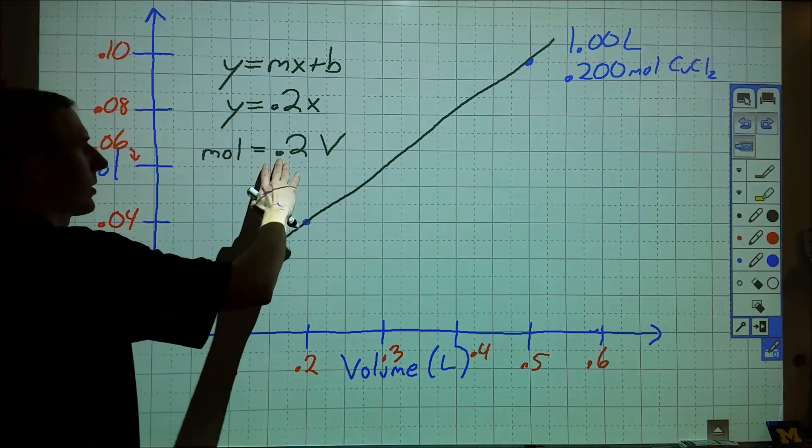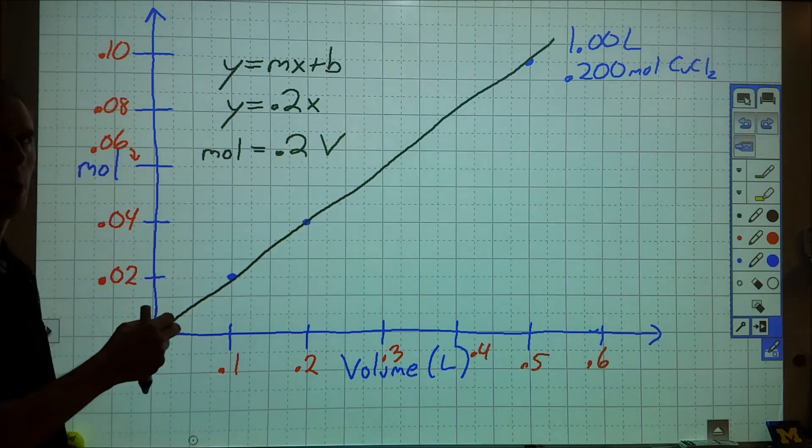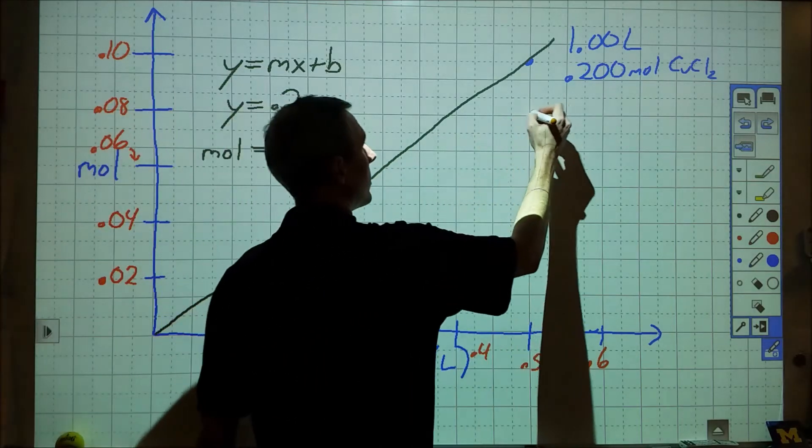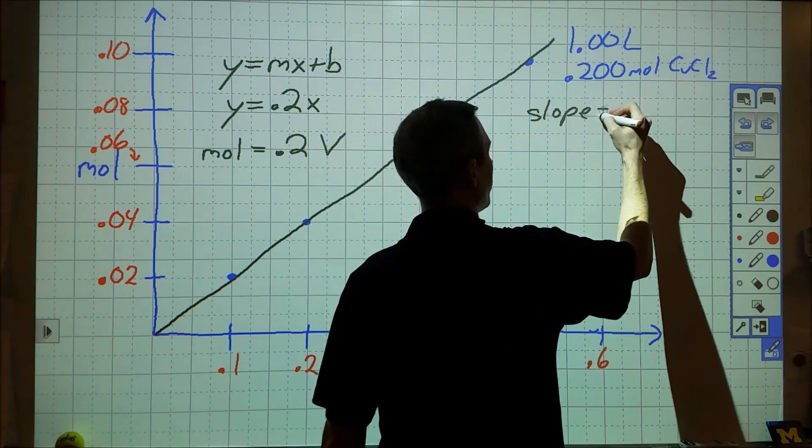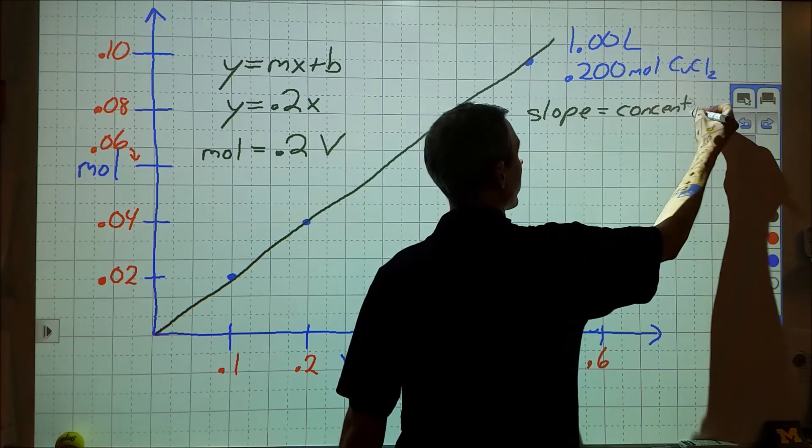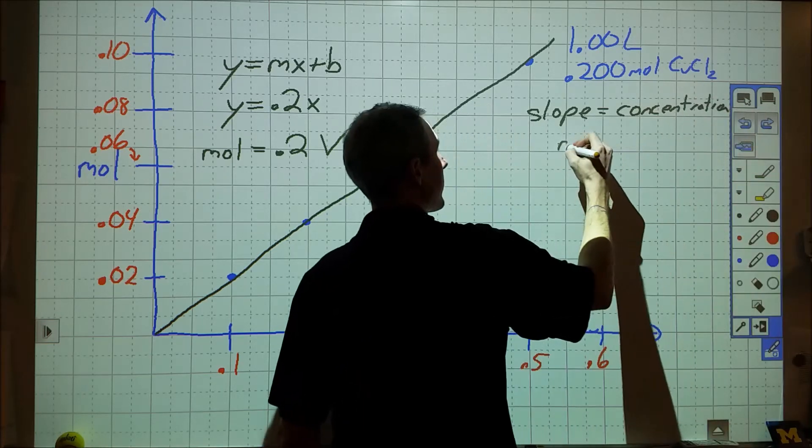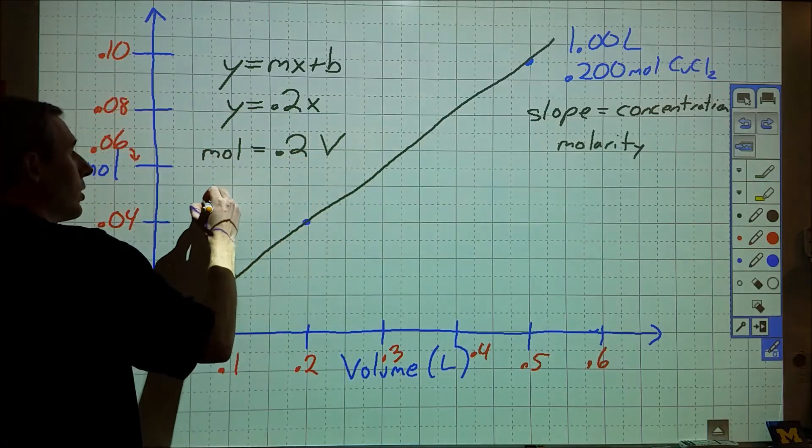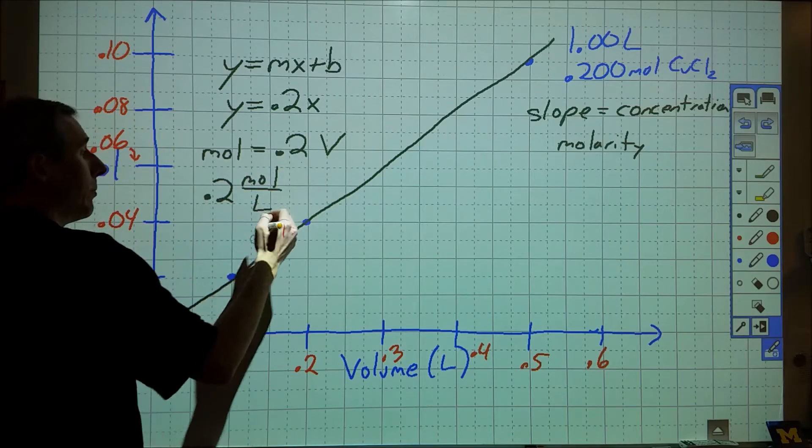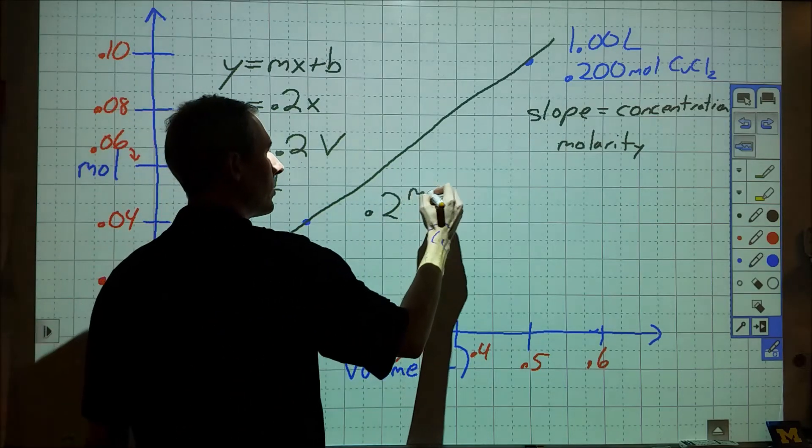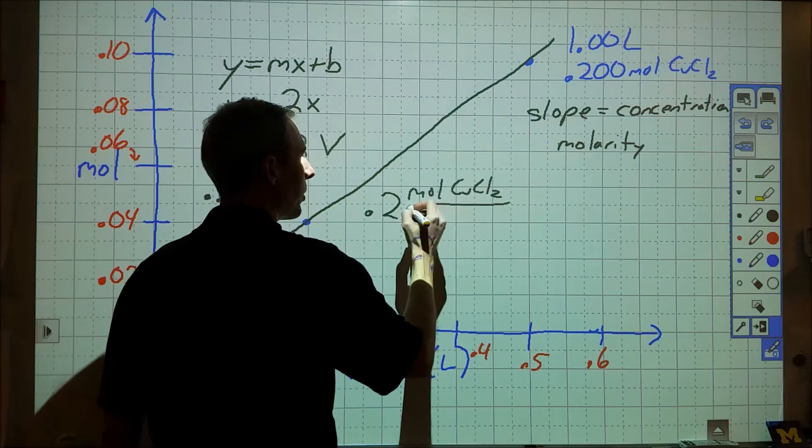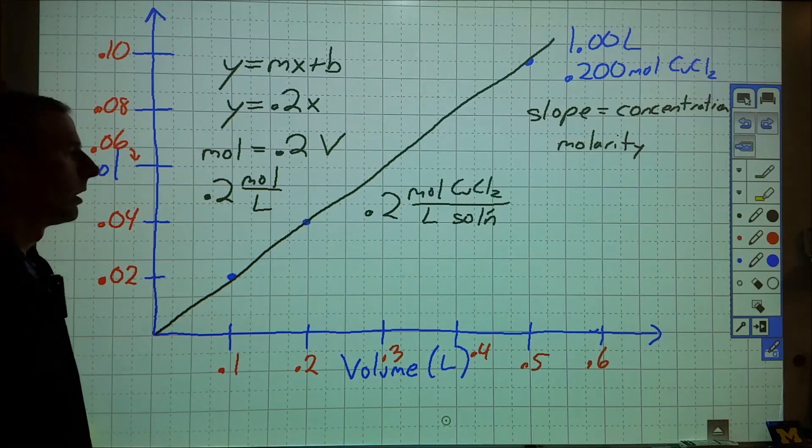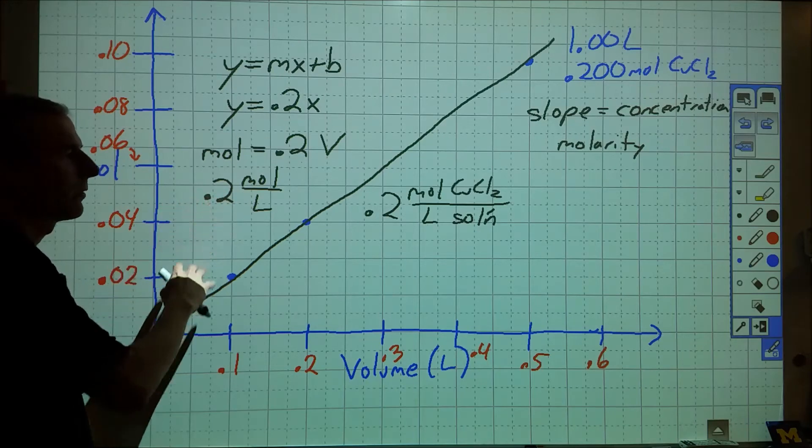So the next question I have is, what does this represent? What does this slope of moles versus liters represent? And what it represents is the concentration. So the slope of this relationship between moles and volume is my concentration of that particular solution. And specifically in this case, that concentration is called molarity. If we ask ourselves, what are the units of this slope? That slope is 0.2 moles per liter. And more specifically than that, it is 0.2 moles, in this case, of copper 2 chloride per liter of solution. So this is actually highly important, and this is one of our key ideas.